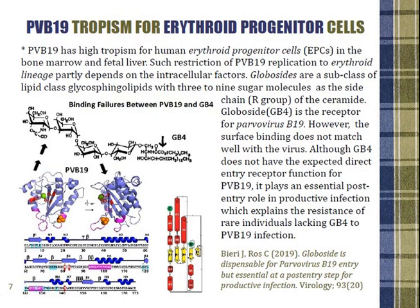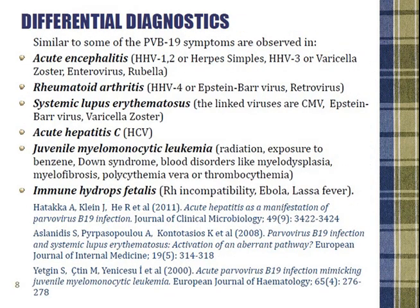The reason that Parvovirus B19 limits its attack on bone marrow stem cells responsible for erythropoiesis is that it does not bind well with its receptor named globoside, or Gb4. Due to this structural mismatch, surface binding does not proceed well between the receptor and the virus, and the latter is aborted. Thus Gb4 does not provide the anticipated direct entry receptor function, yet it plays an essential post-entry role, which explains the resistance of rare individuals lacking this receptor to Parvovirus infection.